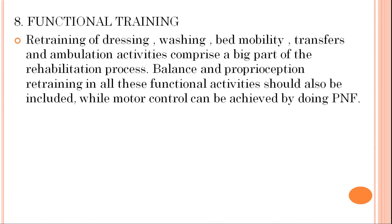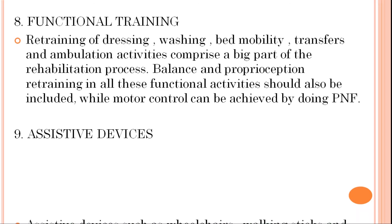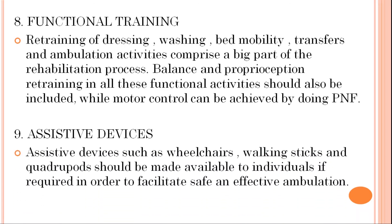Functional training includes retraining of dressing, washing, bed mobility, transfer, and ambulation activities, which comprise a big part of the rehabilitation process. Balance and proprioception retraining in all functional activities should also be included. Motor control can be achieved by doing PNF. Assistive devices are recommended to patients for effective and safe ambulation, including wheelchairs, walking sticks, and quadrupods to facilitate safe and effective ambulation.